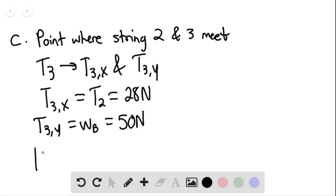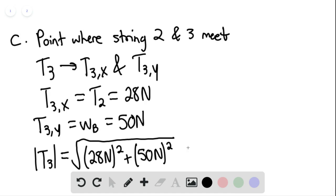So to find the magnitude of T sub 3, this would be the square root of the sum of the squares of the components. And what I mean by that is simply the square root of 28 newtons squared plus 50 newtons squared.